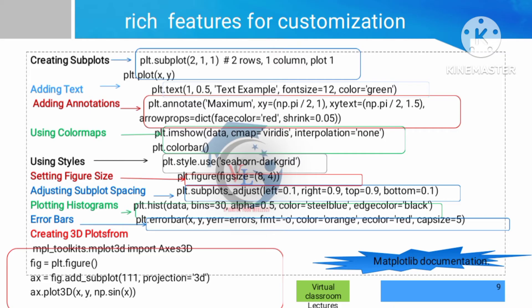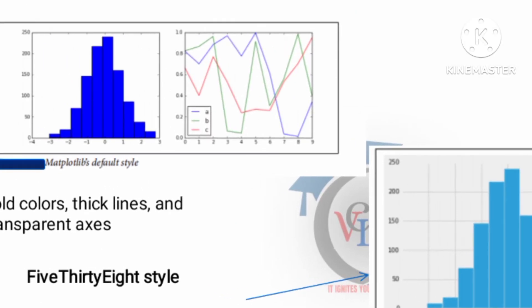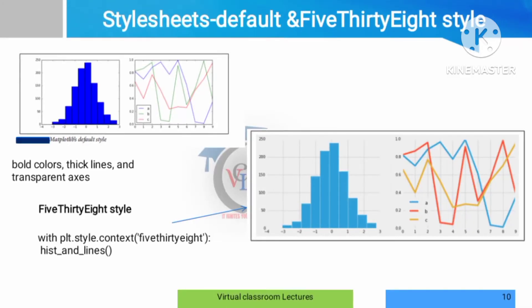Next is 3D plotting. We create a 3D platform using mpl_toolkits.mplot3d. Next, we create a figure and add subplots. In this graph, the default style sheet is shown. If you have a histogram, you have a default format. The 538 style package gives a different display format compared to the default.